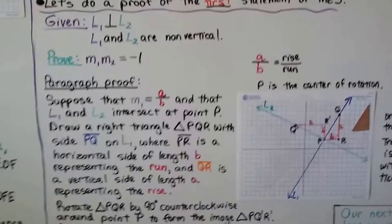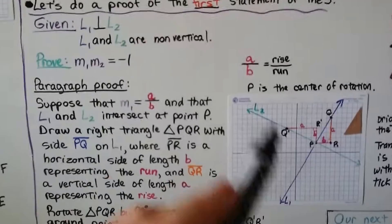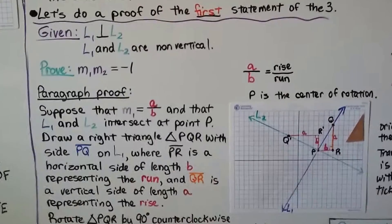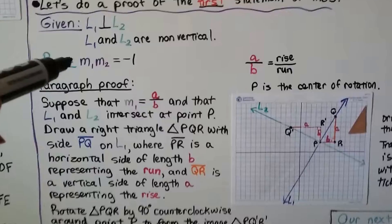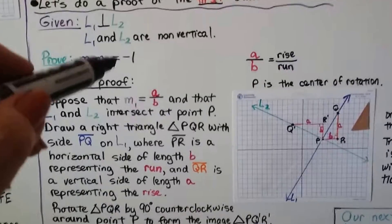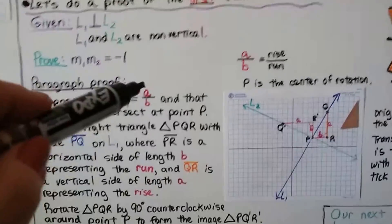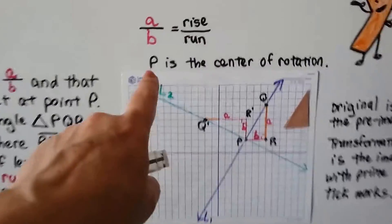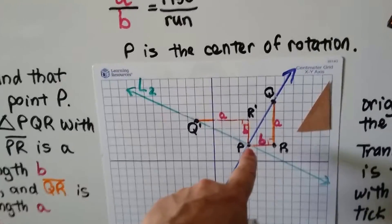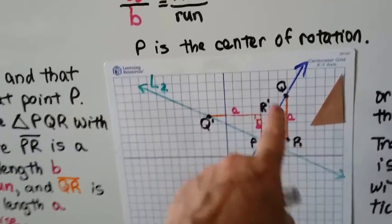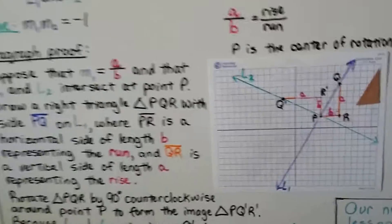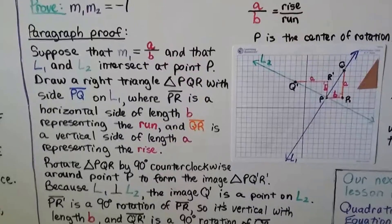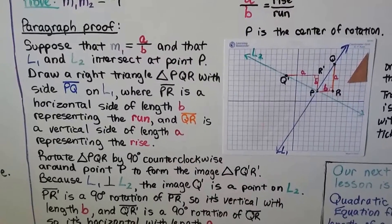For the proof of the first statement: given that l sub 1 (the blue line) is perpendicular to l sub 2 (the green line), and both are non-vertical, we need to prove that m sub 1 times m sub 2 equals negative 1. We'll use A over B as the rise over the run, and we'll use a rotation. Point P is the center of rotation — P won't move, but Q will move to Q prime and R will move to R prime. Suppose m sub 1 is A over B, and l sub 1 and l sub 2 intersect at point P.